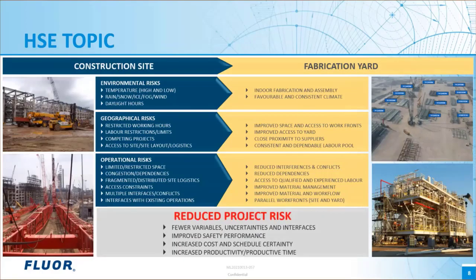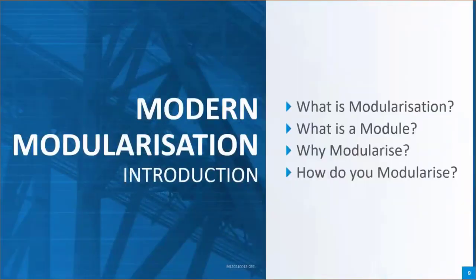We refer to these risks as influencing factors, and they help form the business case for modularization. Modularization can target and address these sources of risk by transferring work to a location where their presence and strength is significantly lower. For example, instead of working outside in changing, challenging, and difficult weather conditions, work can be moved indoors where the environment is sheltered and can have improved access. Modularization helps to lower project risk by reducing the number and scale of variables and uncertainties that can negatively impact project performance.